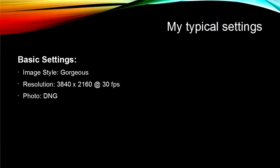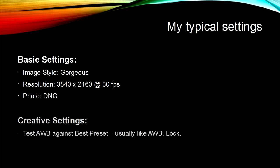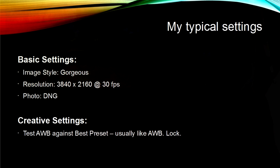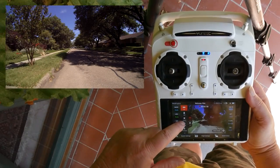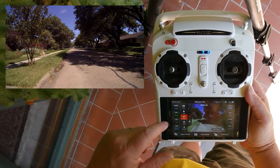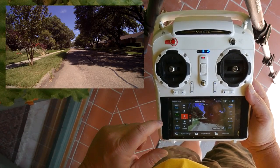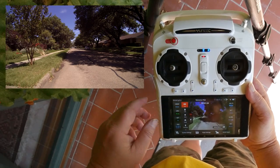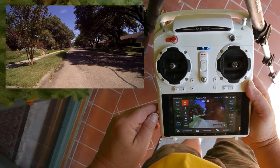I rarely shoot still photos, but I set the camera to shoot DNG rather than JPEG files. For advanced settings, I test Auto White Balance against the best preset for my current conditions. More often than not, I like the Auto White Balance results better, and I hit the lock button to lock that in.